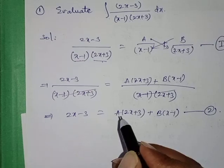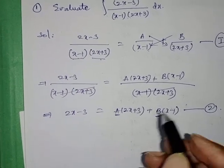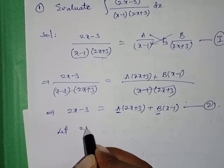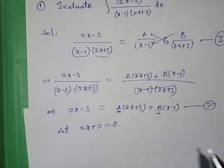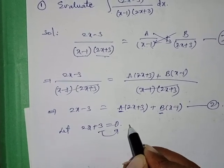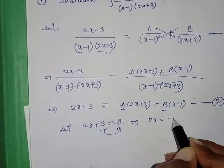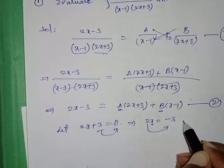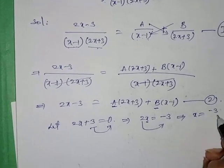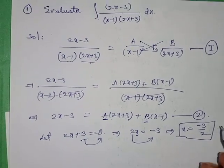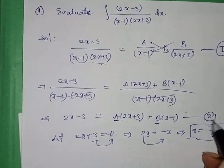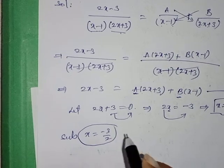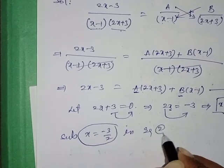Now we need to find A and B. To find B, we set the coefficient of A to zero — that is, let 2x plus 3 equal 0. Solving: 2x equals negative 3, so x equals minus 3 by 2. Substitute this x value into equation number 2.